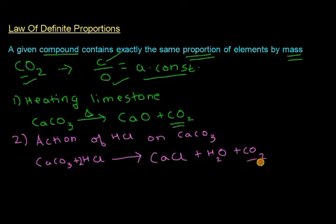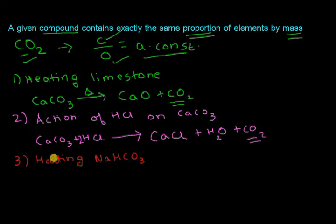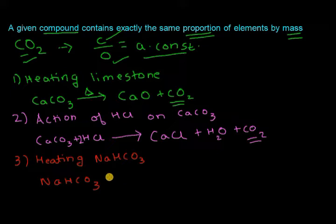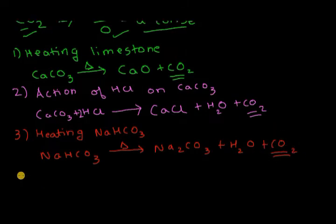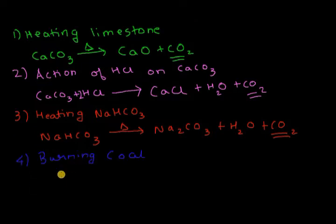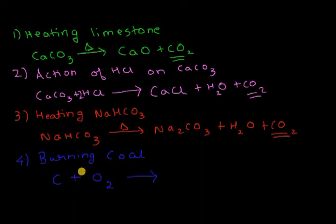The third method of preparation is by heating sodium bicarbonate (NaHCO3). When you heat it you get sodium carbonate (Na2CO3), water, and carbon dioxide. The fourth method is by burning coal — coal is essentially carbon — and for combustion you require oxygen. When carbon burns in oxygen you get carbon dioxide.